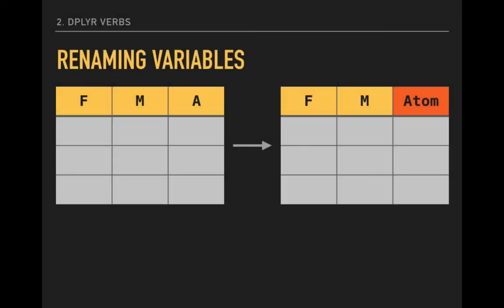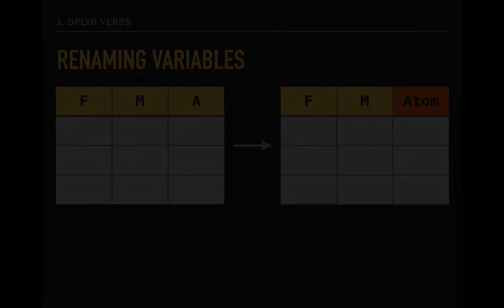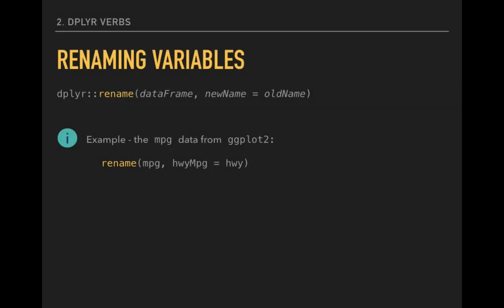The first action is renaming variables. This takes our simple data model from before on the left, the variables F, M, and A, and renames the A variable, atom, which you can see on the right. To accomplish this, we use the verb rename. The rename function takes a couple of key arguments. We want to provide the data frame we are editing, and then, after a comma, specify the new variable name set equal to the old variable name.